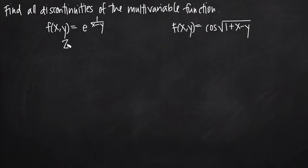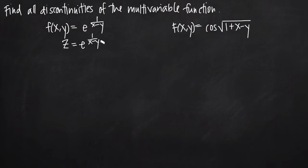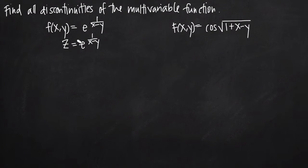We can also think of this as z is equal to e to the 1 over x minus y — those are the same thing. We have a function for z defined in terms of two variables x and y. We're just looking for points where this function will be discontinuous in its domain. We can work our way through each of the pieces of the function. The exponential function e is continuous everywhere in its domain, so we don't really have to worry about that part.